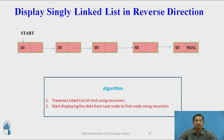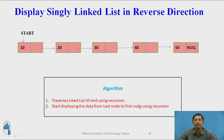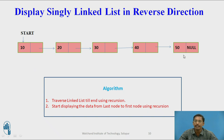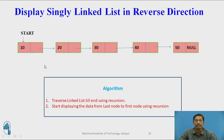Now we will find out how a singly linked list can be displayed in reverse direction. The general algorithm is to traverse the linked list till the end using recursion, then start displaying the data part from the last node to the first node. There are multiple ways to print a singly linked list in reverse direction. Temp starts from start and traverses till the end, then we print from last node to first node.